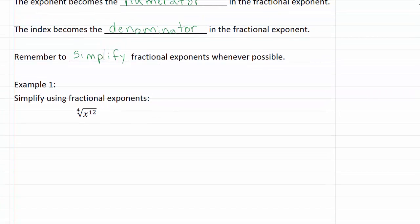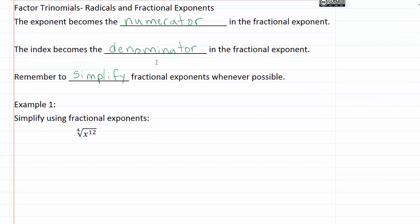So here we've got example one, simplify using fractional exponents. So I've got the fourth root of x to the twelfth. So I can see from my notes up top that my exponent is going to become the numerator and my index is going to become the denominator.